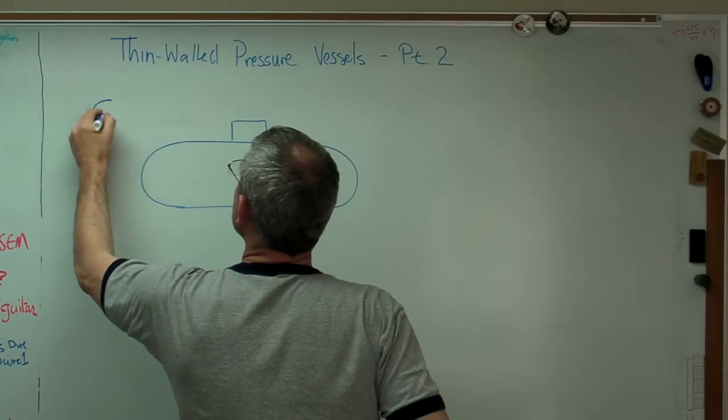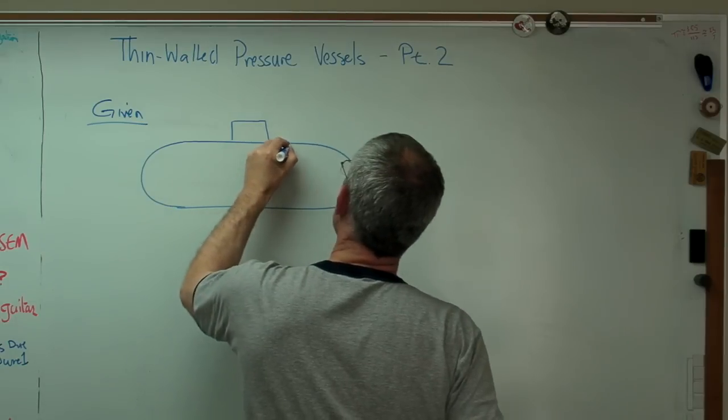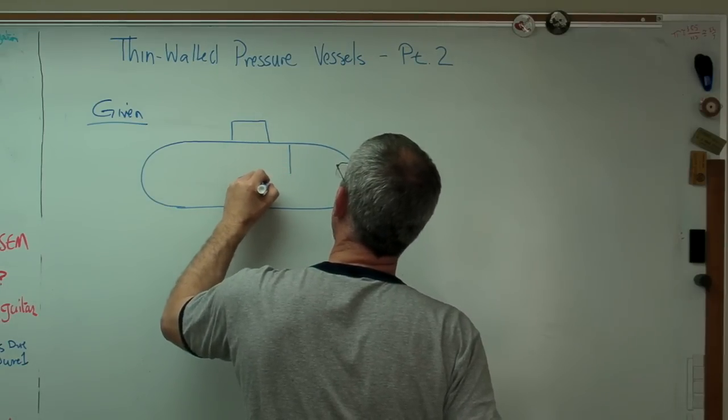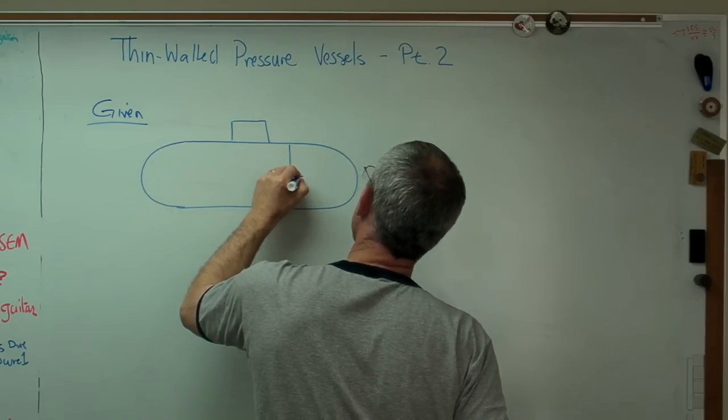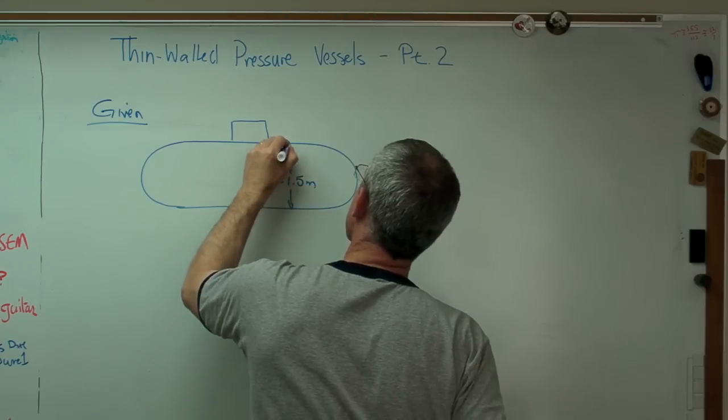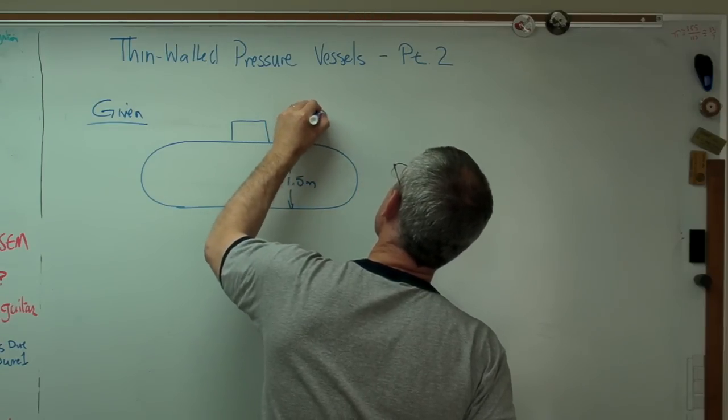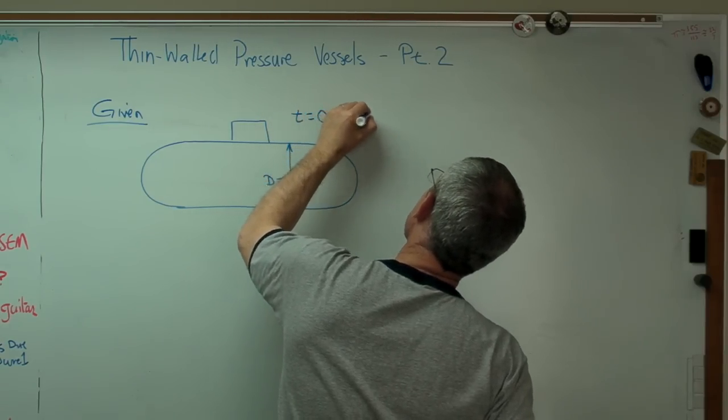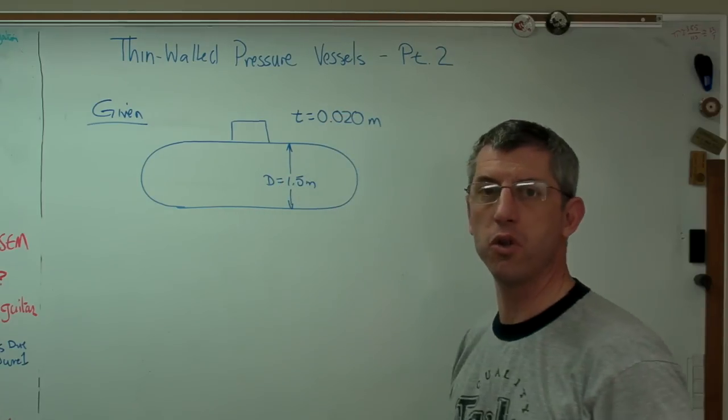So we're given this thing, and let's just say the outside diameter is 1.5 meters. The wall thickness is 0.20 meters, 20 millimeters. And let's say also that the pressure is 25 atm.